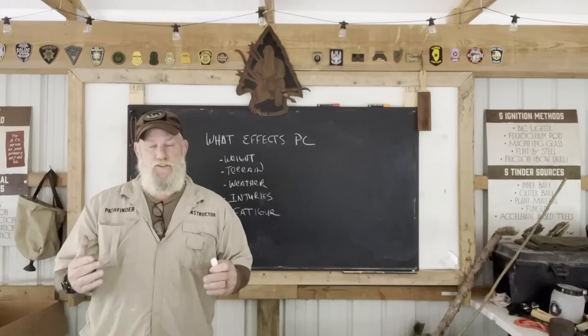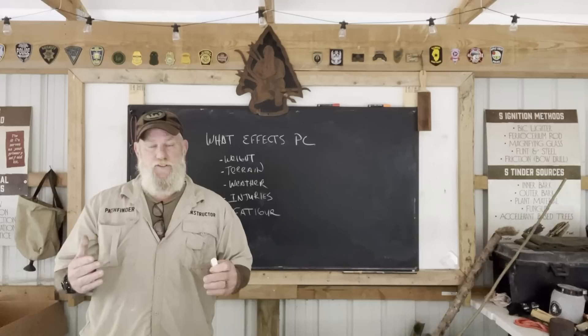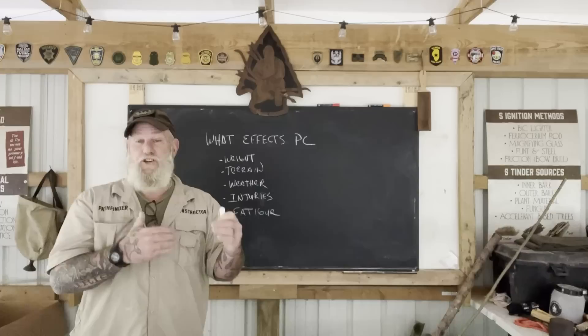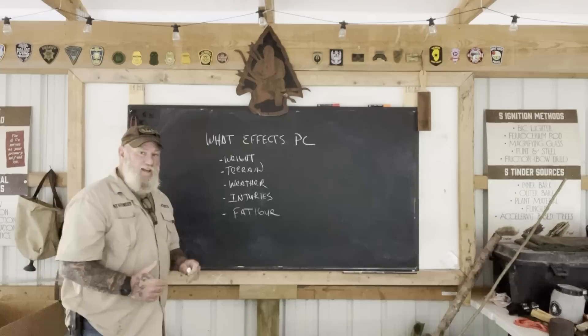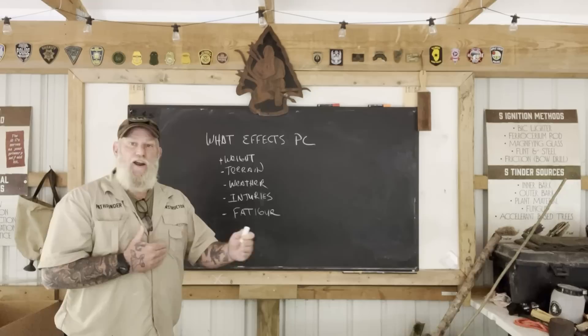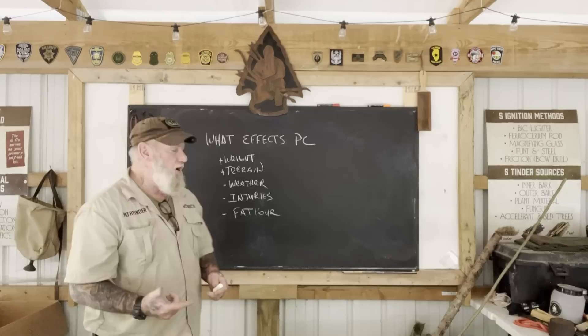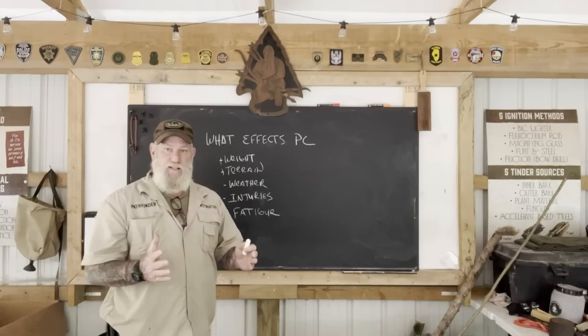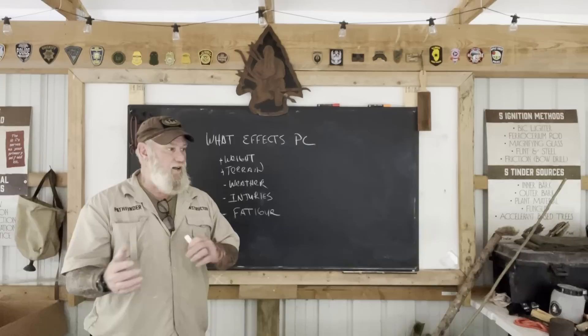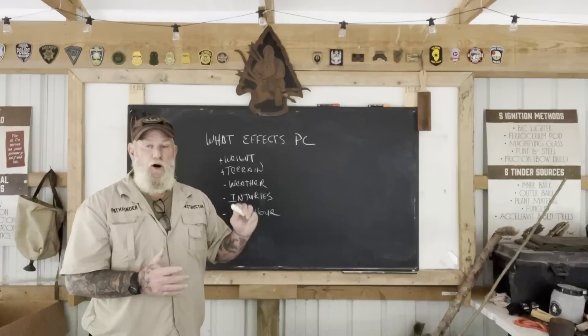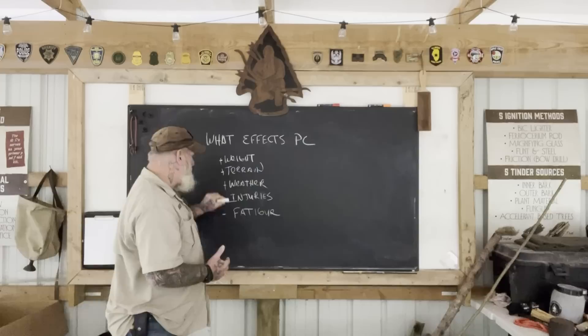As you begin to track your pace count, several factors need to be kept in mind using our 5x5 system. First is weight — the more weight you're carrying, the less stride you'll have. Second is terrain: uphill, downhill, sand, mud, wet clay — all of those terrain features affect your pace count. You need to check your pace count uphill, downhill, and in loose terrain, and note these in your navigation notebook.